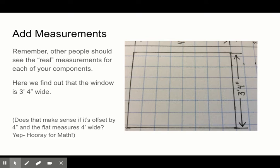And we're going to add our measurements so people can see that the window is three feet four inches wide. This will help the people building your imaginary or real set know exactly how big it should be. And you can do the math there. So three feet four inches plus four inches on each side equals four feet. Hooray!